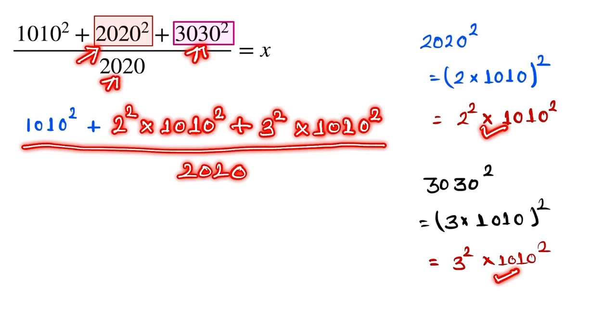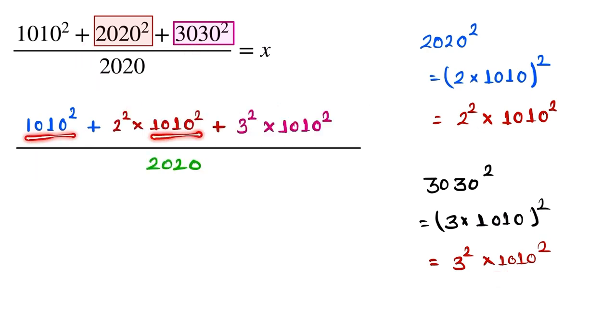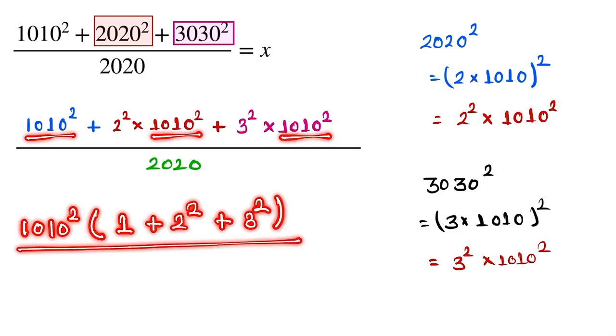Now here we focus here 1010 the square is common in all part. Here is 1010 squared times (1 plus 2 the square plus 3 the square) by 2020.